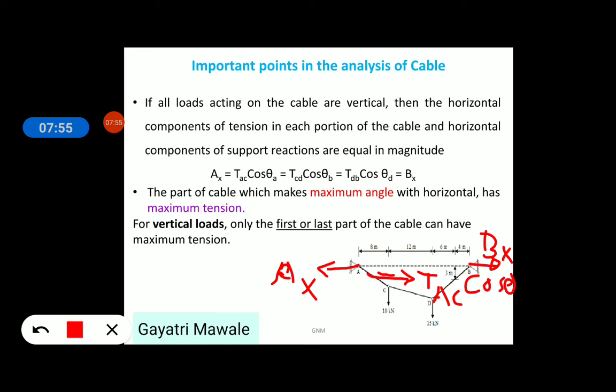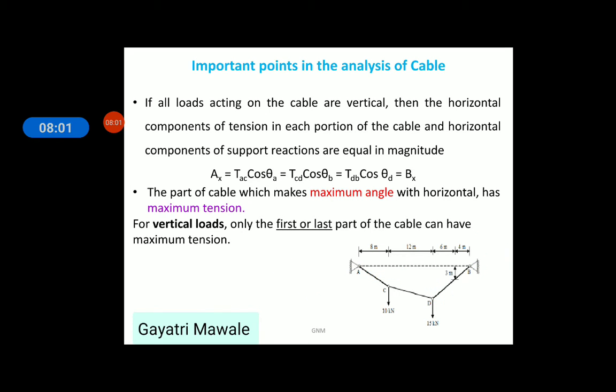The part of cable which makes maximum angle with horizontal has maximum tension. Suppose, angle made by AC part here is theta and angle made by DB part of the cable with horizontal is beta. And if theta is greater than beta then, obviously, maximum tension will be in AC part of the cable.